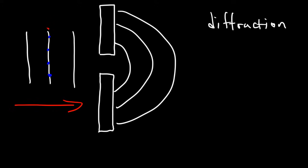So for example, this point emits a spherical wave, this one emits a spherical wave, and so forth.